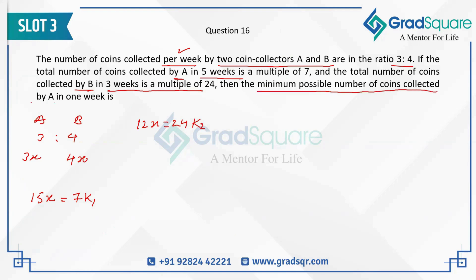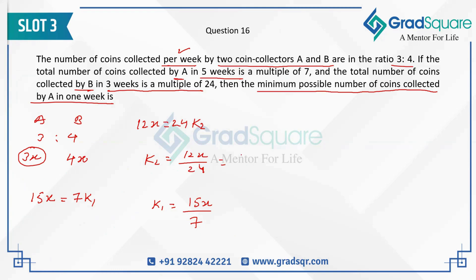The minimum possible number of coins collected by A in one week means we are looking at the minimum possible value of x. Now, k₁ should be nothing but 15x divided by 7 — meaning 15x must be divisible by 7 because k₁ has to be an integer. Similarly, k₂ is 12x divided by 24, which simplifies to x divided by 2, and we get 5x divided by 7.